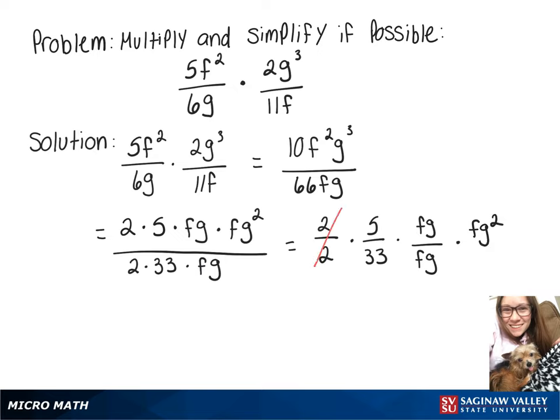Now, 2 over 2 and fg over fg cancel because those equal 1. We're left with 5 over 33 times fg², which is 5fg² over 33.